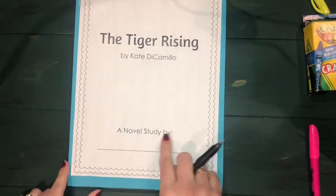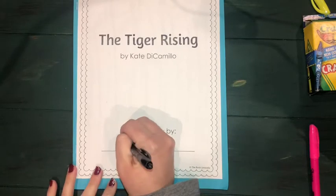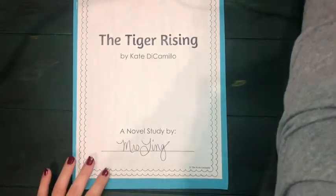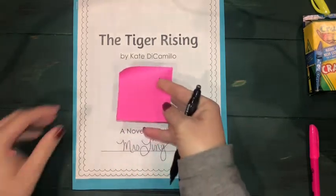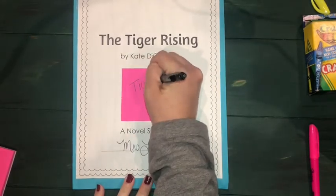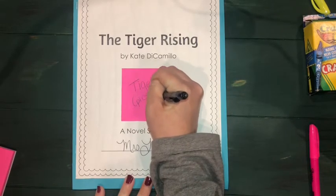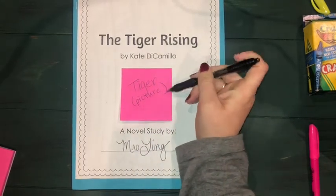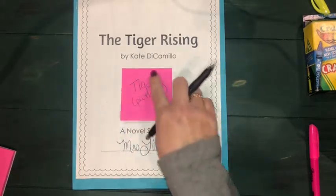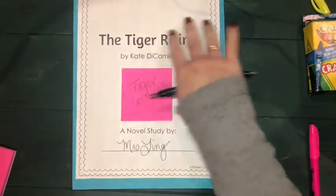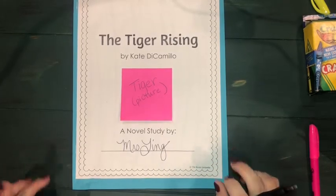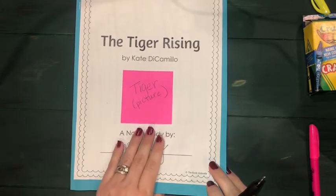Today you're going to start by writing your name in the novel study packet — write your own name, not mine. Then you're going to decorate it. There's something very specific I want you to do: where I'm putting my sticky note, this is where you're going to draw a picture of a tiger. You can look up pictures with your parent's help from a Google search, or look at the picture I'm going to post of the front cover of the book. Then you can add more color around the frame or in the background, drawing it as Kate DiCamillo described — the tiger like staring at the sun through the mist.